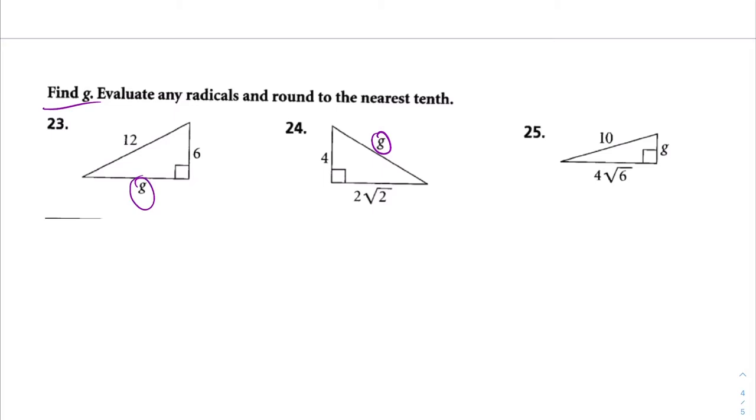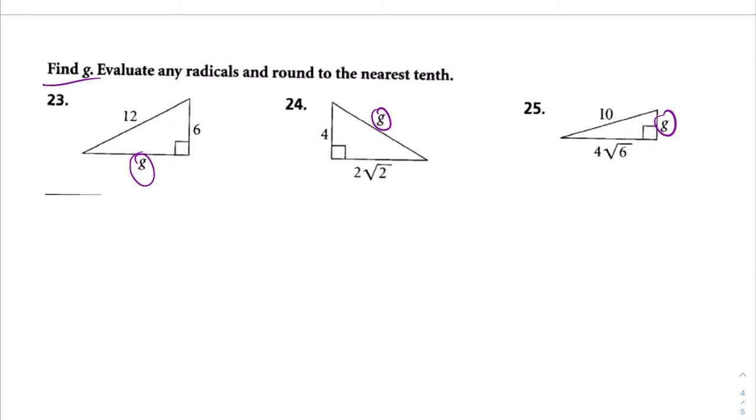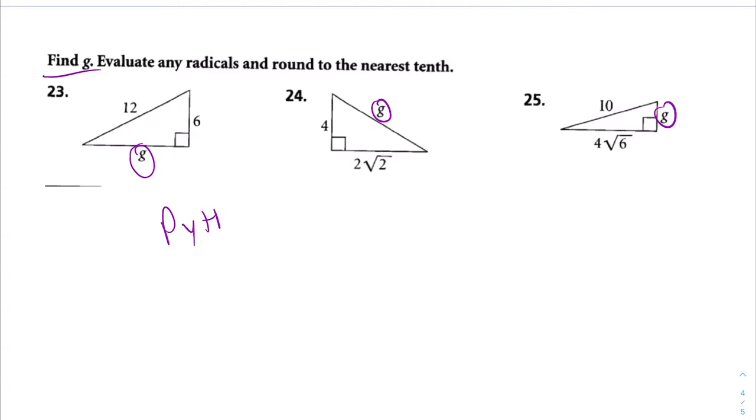But the thing is, for at least in this 2020-2021 school year, you students haven't learned the Pythagorean theorem. So I'm just going to tell you the Pythagorean theorem. The formula for the Pythagorean theorem: A squared plus B squared equals C squared.